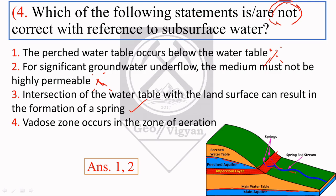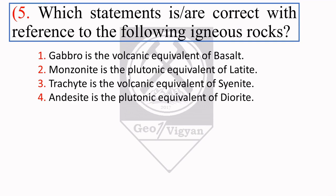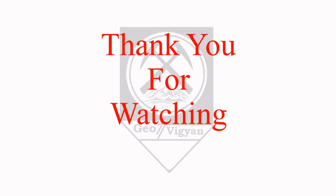The next question: which statements are correct with reference to igneous rocks? Option 1 — gabbro is the volcanic equivalent of basalt: this is wrong; gabbro is the plutonic equivalent of basalt. Option 2 — monzonite is the plutonic equivalent of latite: this is right. Option 3 — trachyte is the volcanic equivalent of syenite: this is right. Option 4 — andesite is the plutonic equivalent of diorite: this is wrong; andesite is the volcanic equivalent of diorite. So the right answer is options 2 and 3. This covers sections 1 and 2; section 3 will be discussed in the next video.